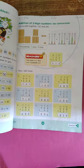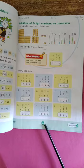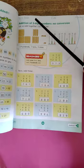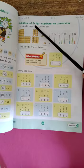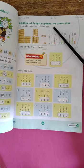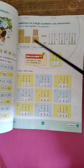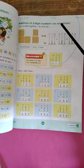Now come on the next page. Page number thirty three of your countdown. Write the same date and day on this page. Now addition of three digit numbers, no conversion.